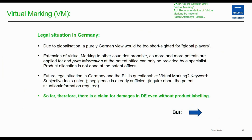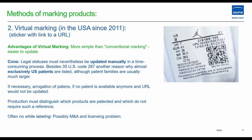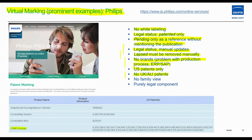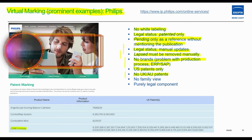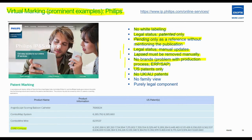We also spoke about the legal situation in Germany, and the conclusion was that it could also serve as copy protection in Germany. We again spoke about virtual marking of Philips — because the first episode of this podcast deals with Philips, and they do virtual marking very well. However, it is only a static process, not dynamic virtual marking.